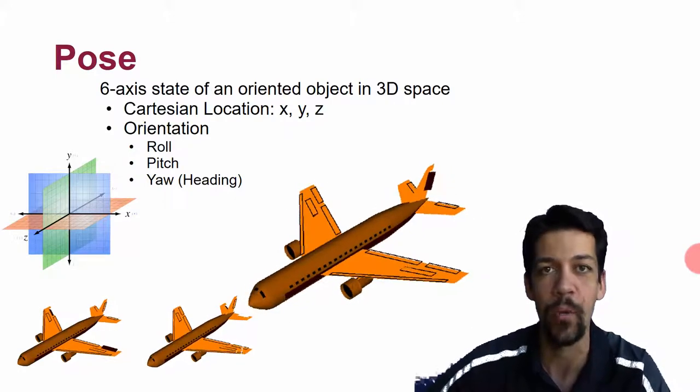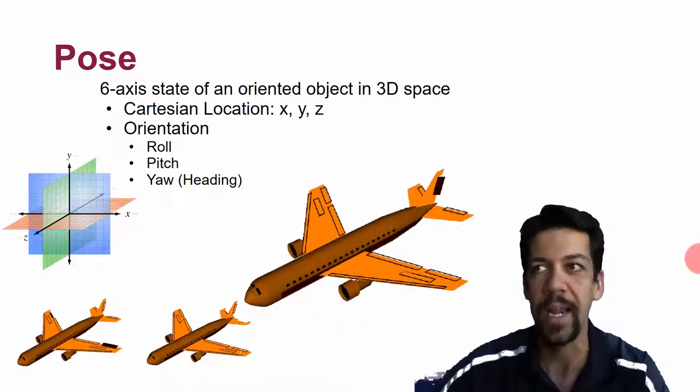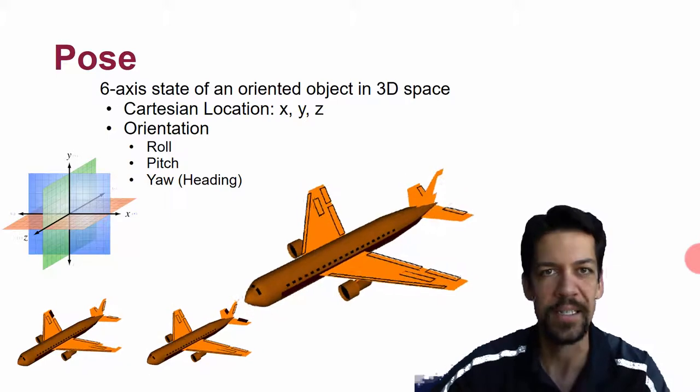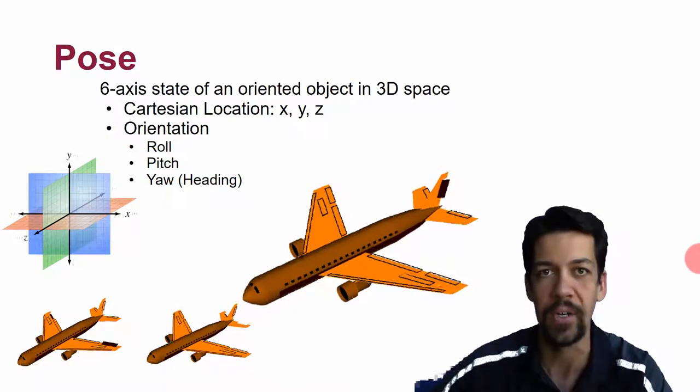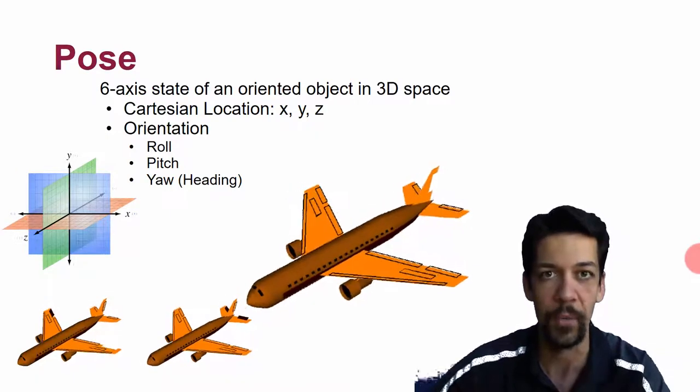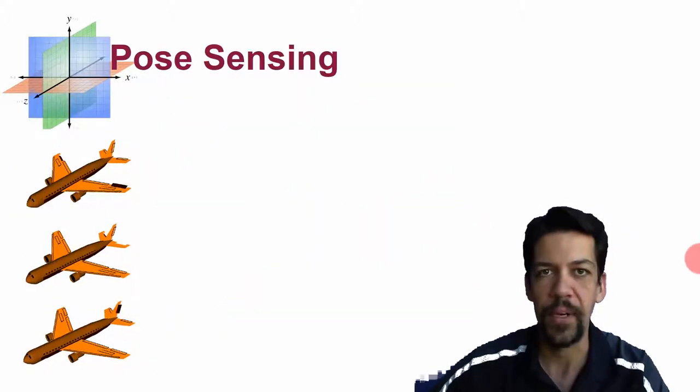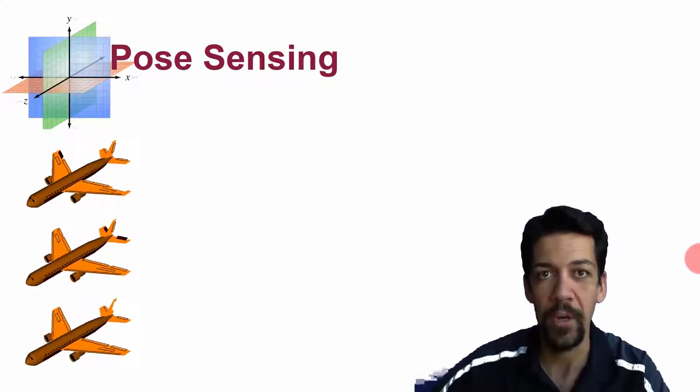This helps us represent where our systems are in the world and gives us a grounding for the sensors they're reading and the targets they're trying to hit. It develops the basis for navigation for robotics systems. The idea here is to figure out how we implement pose sensing.